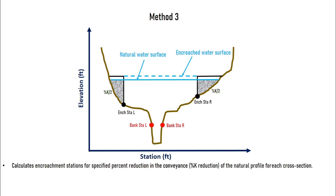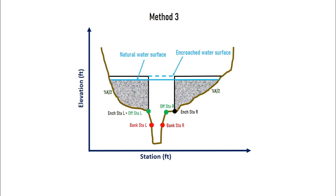In method 3, we need to specify reduction in conveyance based on the natural water elevation. For example, if we specify a 40% conveyance reduction, the algorithm will deduct 20% of conveyance from both banks, resulting in an equal conveyance reduction. If one bank has insufficient capacity to achieve the intended reduction, the algorithm will deduct the remaining conveyance from opposite bank. If the amount of conveyance to be removed exceeds the capacity of both sides, the encroachment station will be set to either the bank station or the offset station.